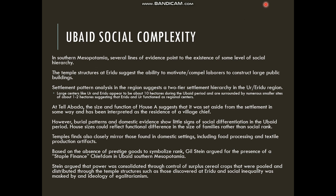The temple structures, particularly at Eridu, suggest the ability to motivate or compel laborers to build large public buildings. It would have taken an extensive amount of labor to build these tripartite-style large temple complexes on platforms. Settlement pattern analysis in the region suggests a two-tiered settlement hierarchy — large centers like Ur and Eridu at about 10 hectares with 2,000 to 3,000 inhabitants, surrounded by numerous smaller settlements of one to two hectares, much like Tal Abadah, suggesting Eridu and Ur functioned as regional centers able to draw in people from outlying areas.